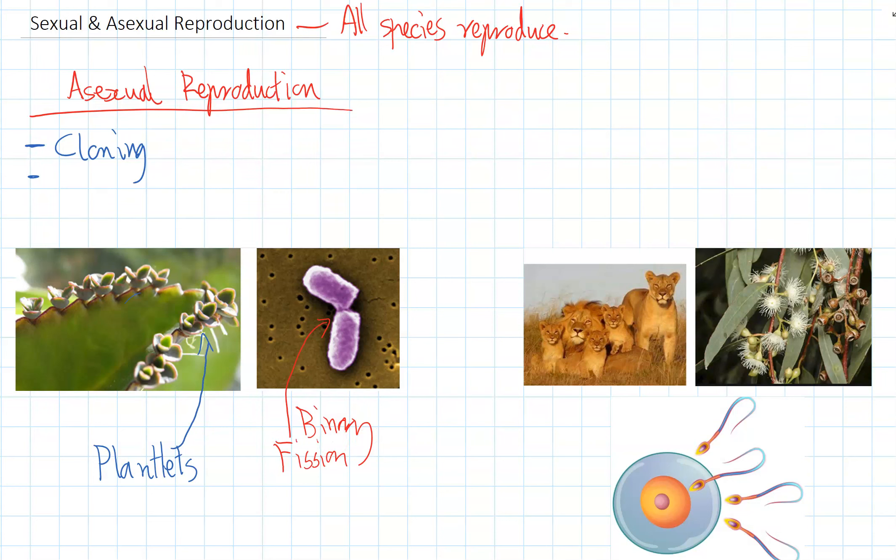So overall, asexual reproduction is cloning where an individual makes an exact copy of itself.